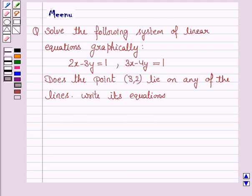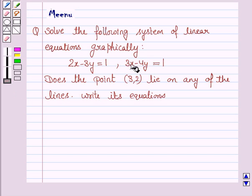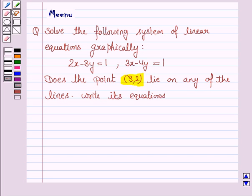Hello and welcome to the session. Let's work out the following problem: solve the following system of linear equations graphically. The given equations are 2x minus 3y is equal to 1 and 3x minus 4y is equal to 1. Does the point 3, 2 lie on any of the lines? Write its equation.